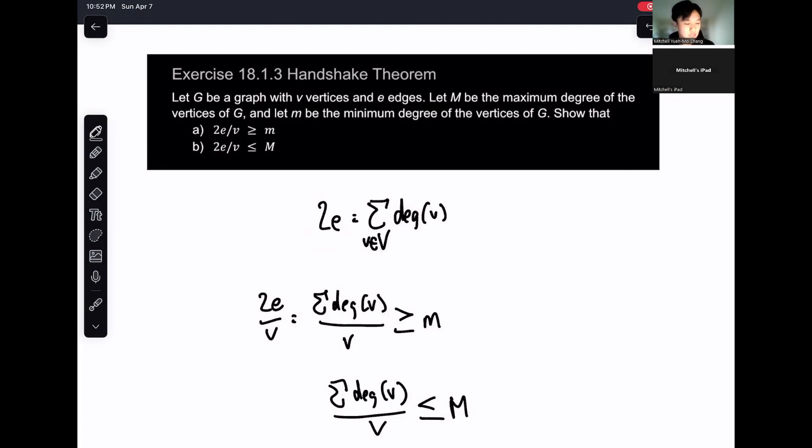That's the general idea behind this question: being able to identify when to use the handshake theorem or why it might be useful. In this case, we noticed it says 2E, which is representative of what we need for this question.